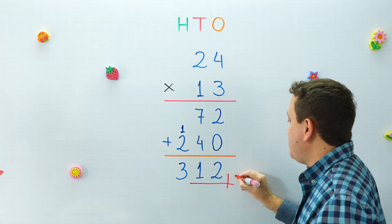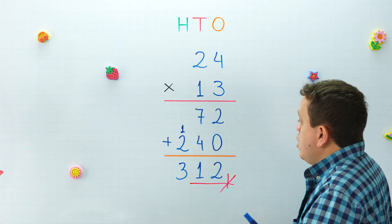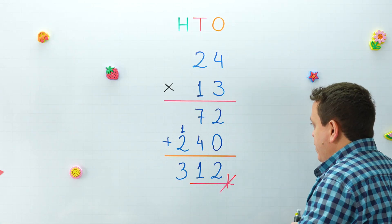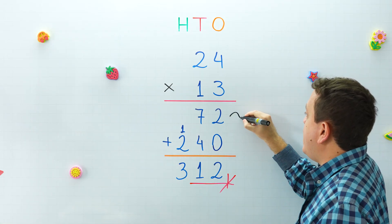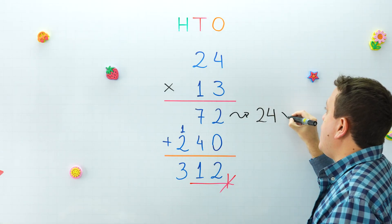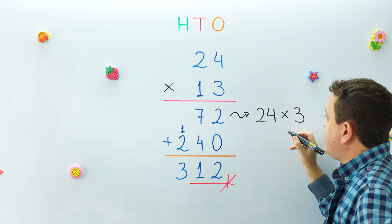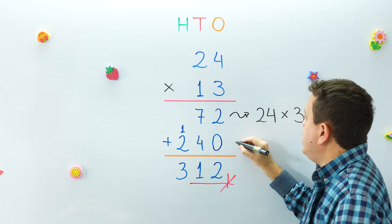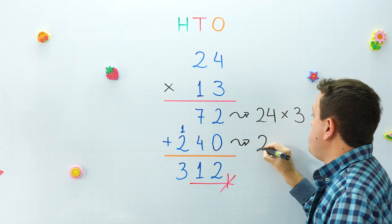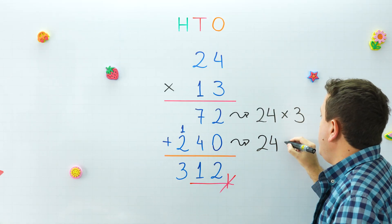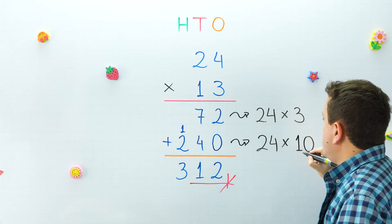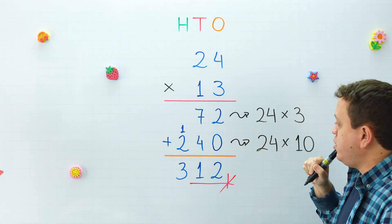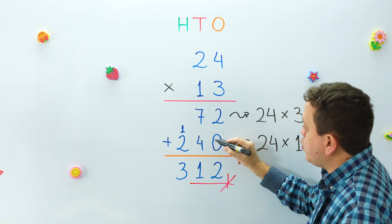Our final answer is 312. Was it difficult? I don't think so. Let's remember the three steps: in the first step we multiplied 24 by three ones — 24 times 3 equals 72. In the second step we multiplied 24 by one ten, or 10 — 24 times 10 equals 240. Remember we start the second line with a zero on the right.